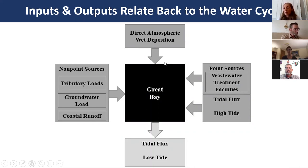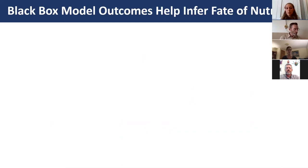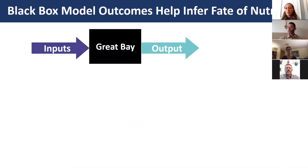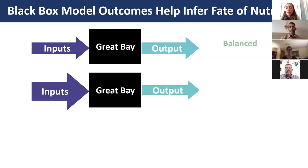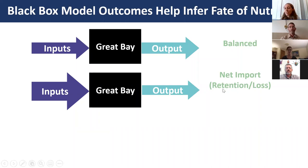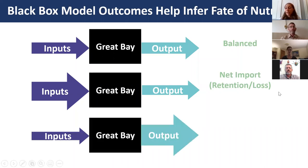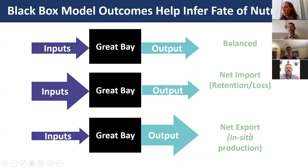Adding all inputs and subtracting the low tide flux—our one output—gives us our delta storage. Three potential outcomes help infer nutrient fate: inputs equal outputs (conservative, balanced system); inputs greater than outputs (net import, retention, or permanent loss); or inputs less than outputs (net export or in-situ production, where Great Bay is producing additional sources internally).